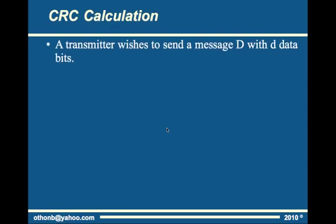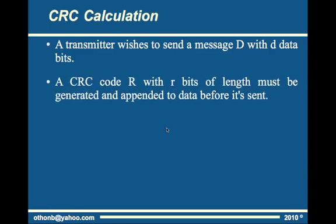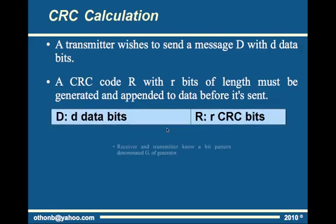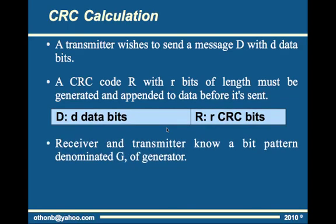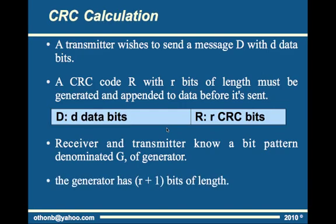Let's assume that we have a transmitter that wants to send a message D with D data bits. This message must be appended with a CRC code calculated based on the data bits and a known pattern of bits called the generator, denominated by G. G is known by everyone involved in the communication as the basis of CRC calculation. Obviously, the first bit of G must be 1, and moreover, it's recommended to be an odd number.